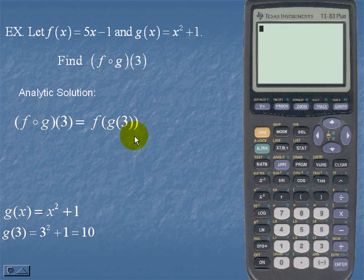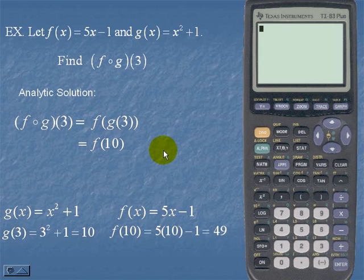So we would simply substitute g of 3 for 10. So now we should find f of 10. Remember that we were given f of x, which was 5x minus 1. To find f of 10, we simply replace x with 10 in our function. So f of 10 is equal to 49.